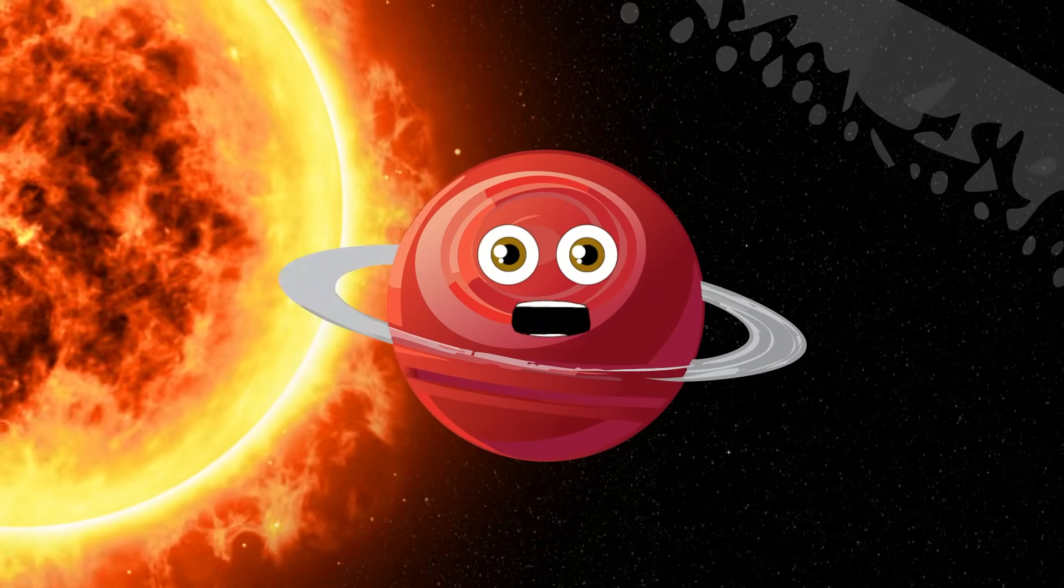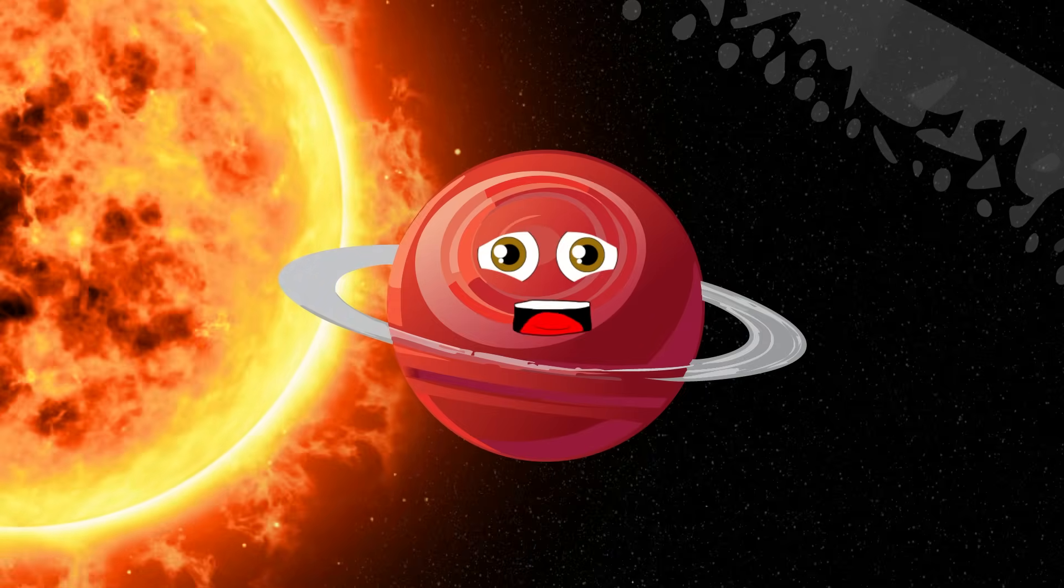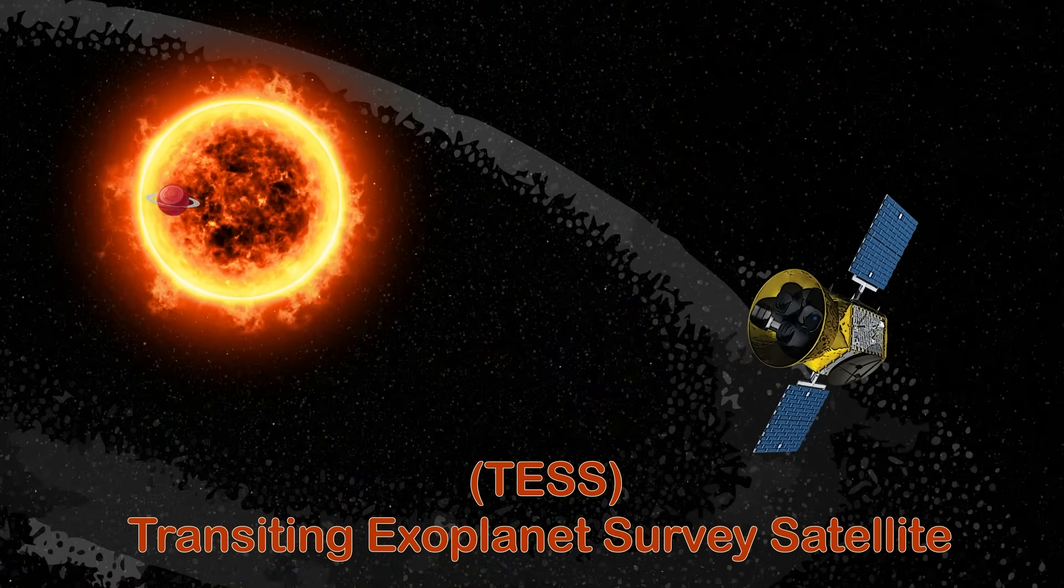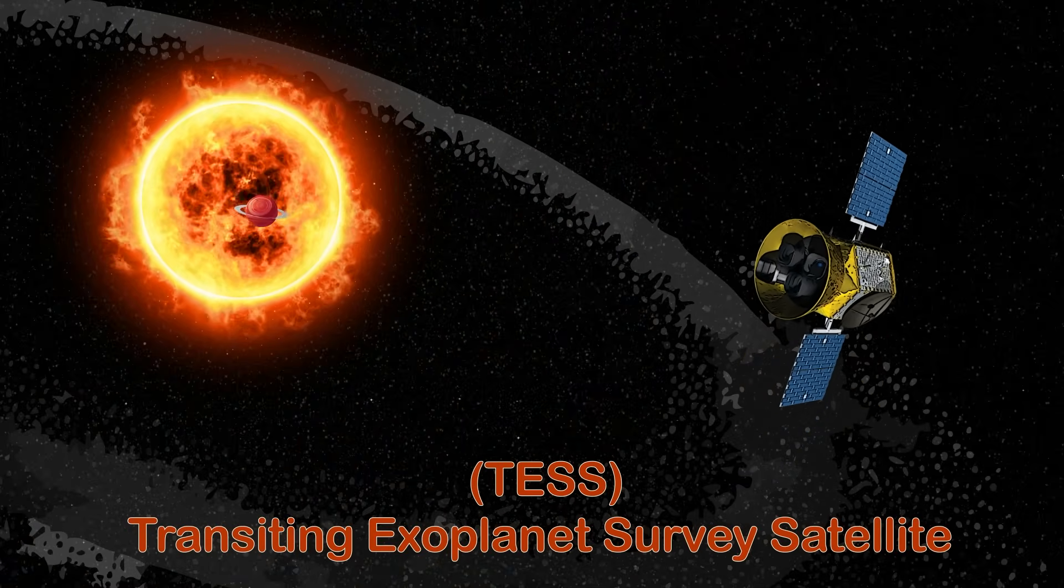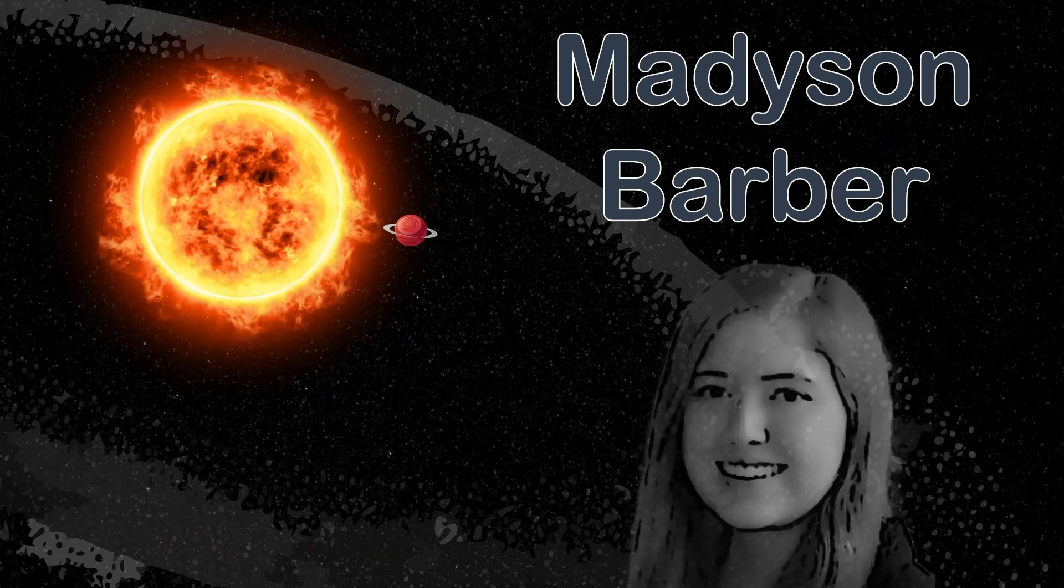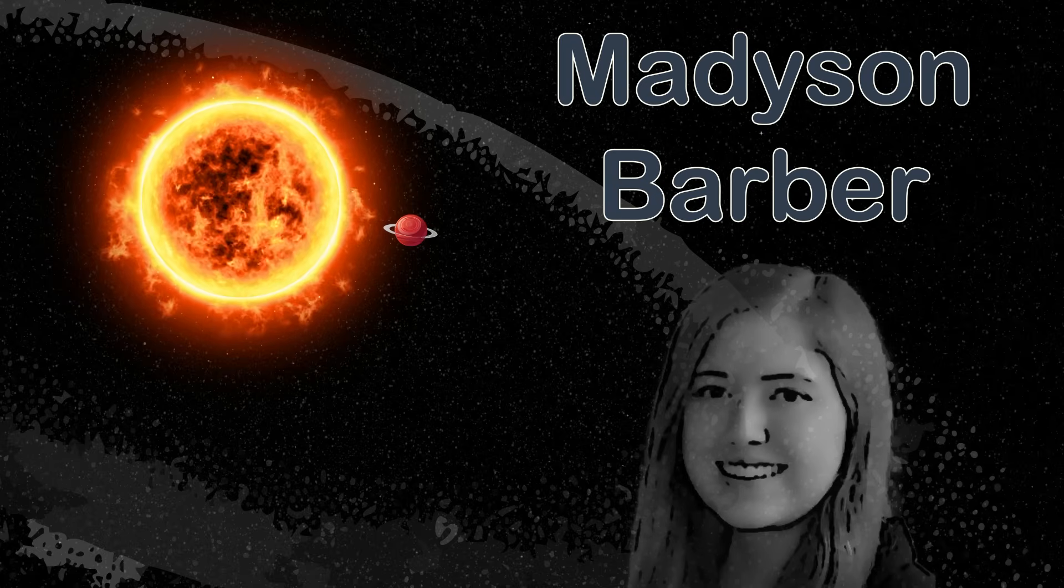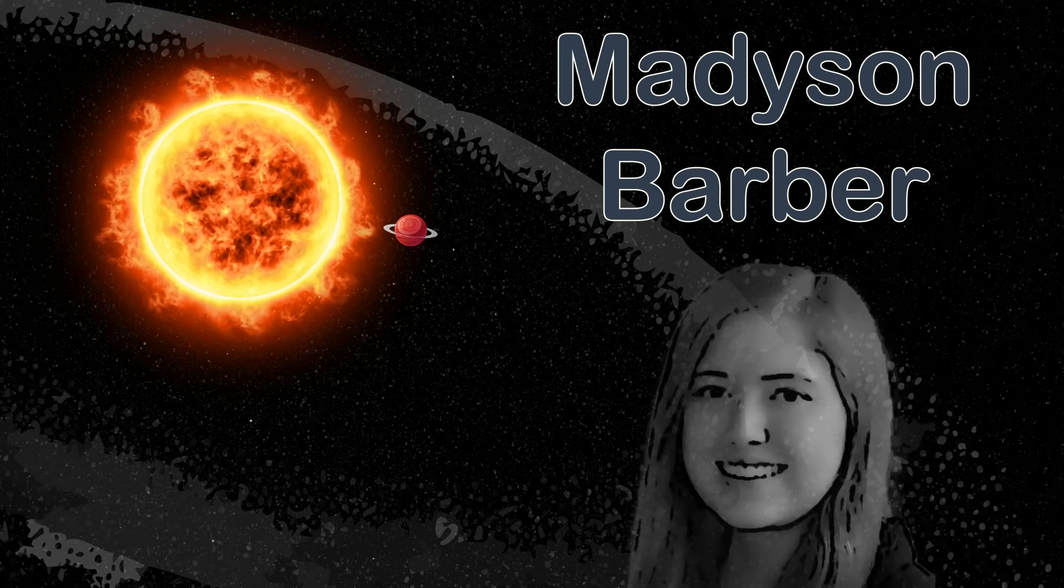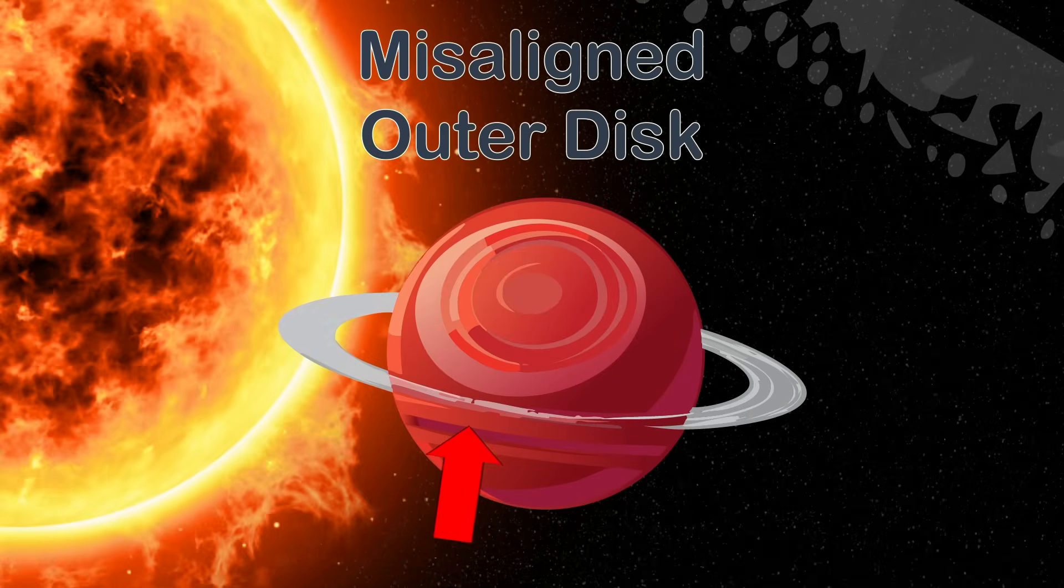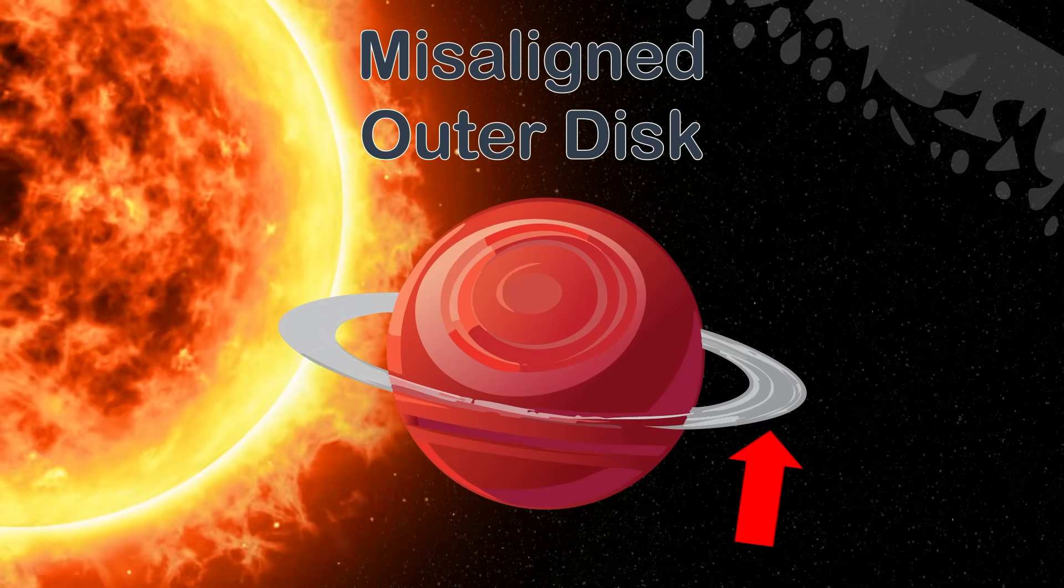My rapid formation challenges traditional models I hear, suggesting gas giants can form in as little as 3 million years. Identified using NASA's TESS, transiting in front of my star it's how you'd see me best. I was discovered by the student Madison Barber in Chapel Hill at the University of North Carolina. I have a misaligned outer disk that may have resulted from interactions with planetary migrations.